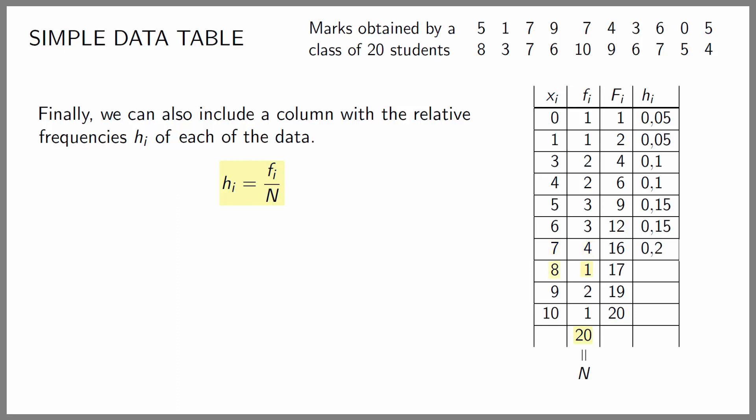The relative frequency of 8 is 1 divided by 20 which is 0.05. The relative frequency of 9 is 2 divided by 20 which is 0.1. The relative frequency of 10 is 1 divided by 20 which is 0.05. Something that can come in handy to detect errors: the sum of all the relative frequencies h sub i should be 1, otherwise you'll have to review your calculations. In our case if we add all the relative frequencies we get 1, so that's good. That wraps up this video on simple data tables — thanks for watching and see you again soon.